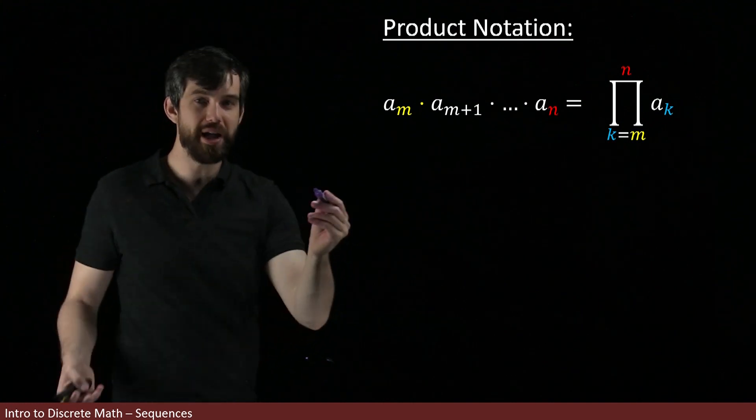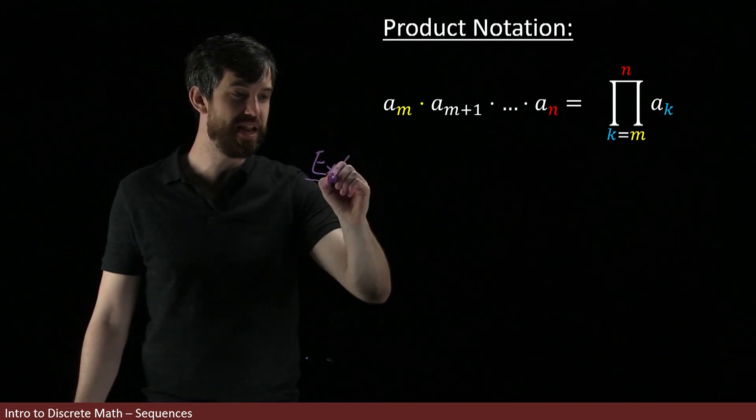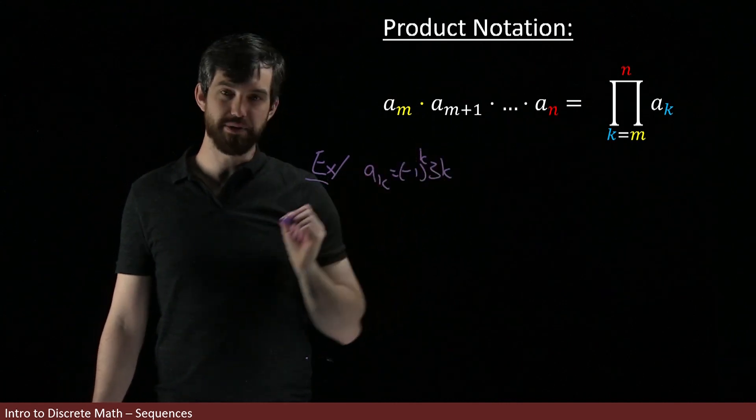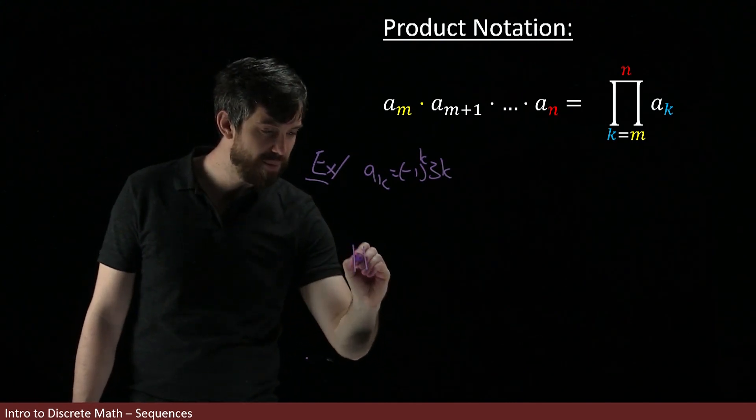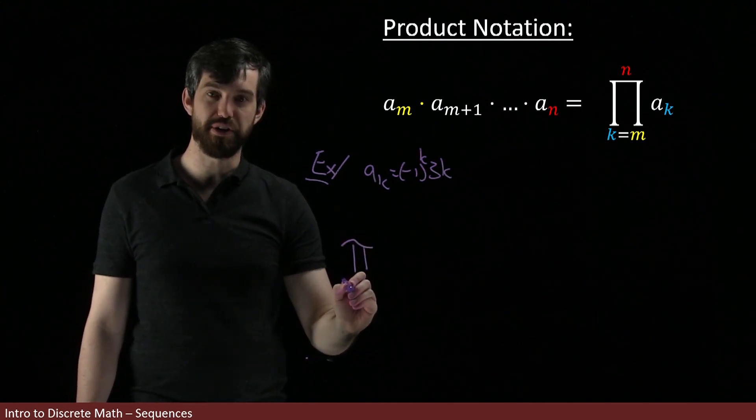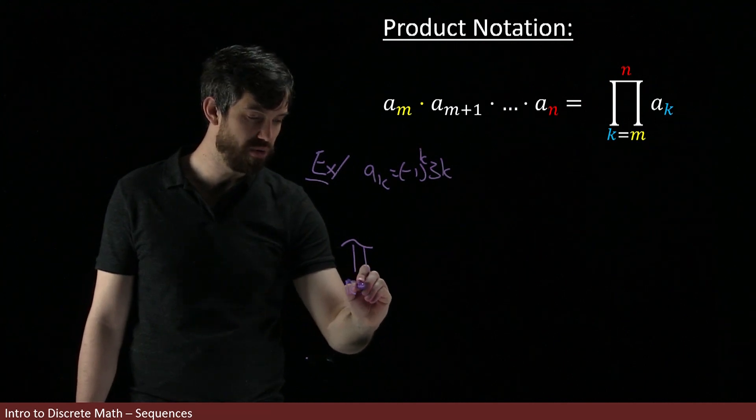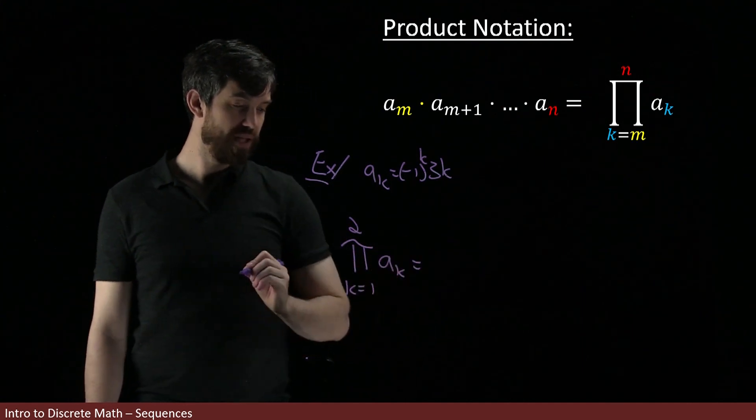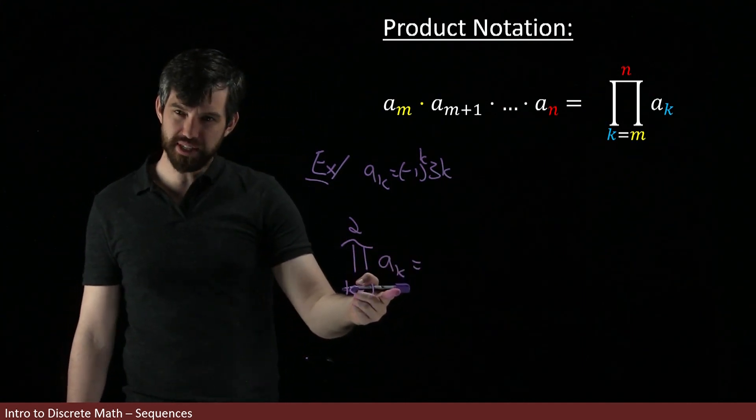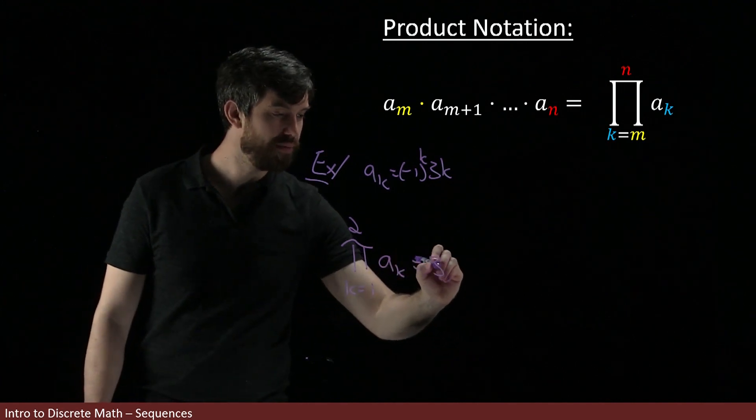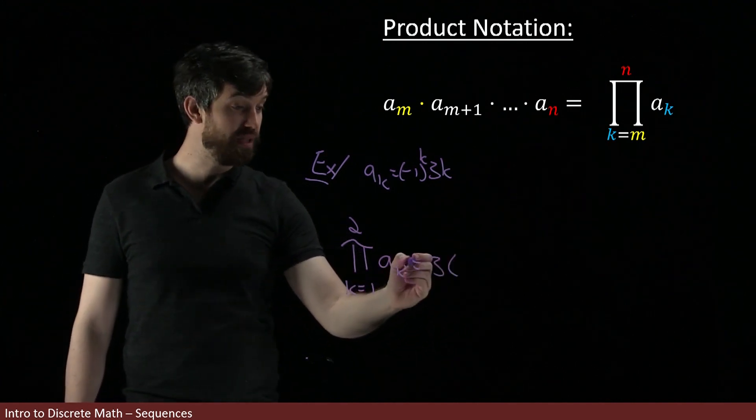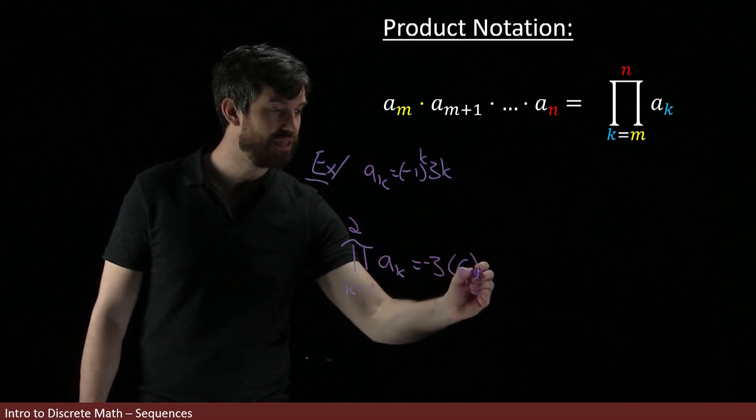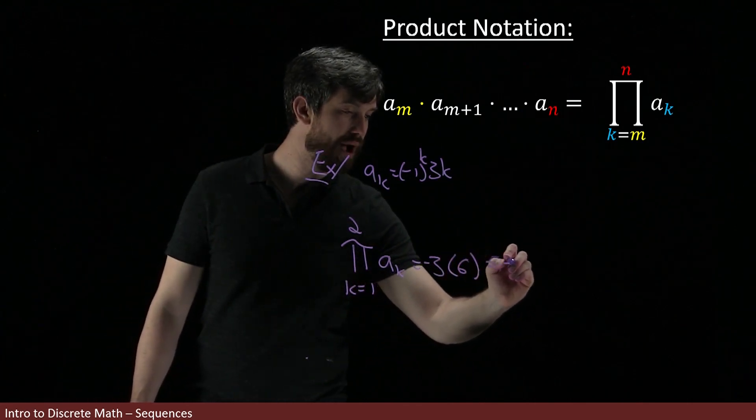And, I can likewise take that same example that we've been doing a few times now. The ak equal to the minus 1 to the k times 3k. And, I could take now this time the product of a bunch of different numbers. How about k equal to 1 up to 2, just to keep our lives simple, of ak. The first ak is going to be the value of minus 3. And, the second ak is going to be the value of 6. And, so, this product is going to be equal to minus 18.